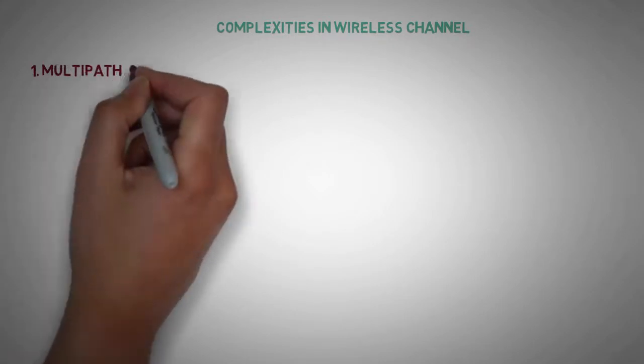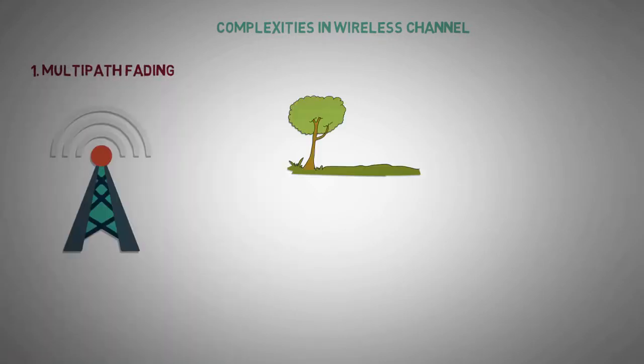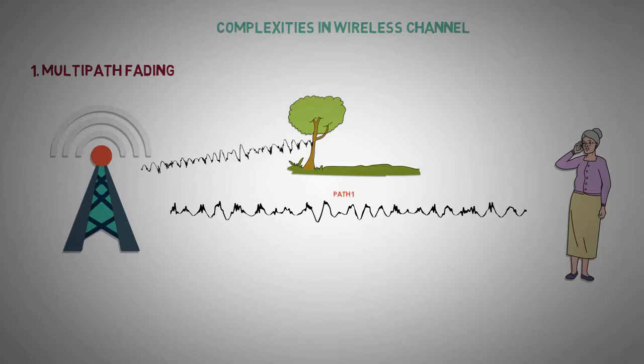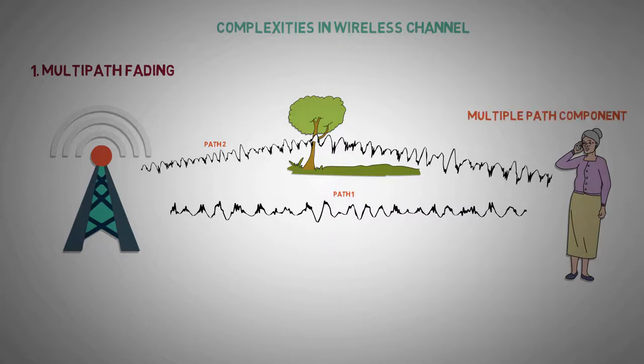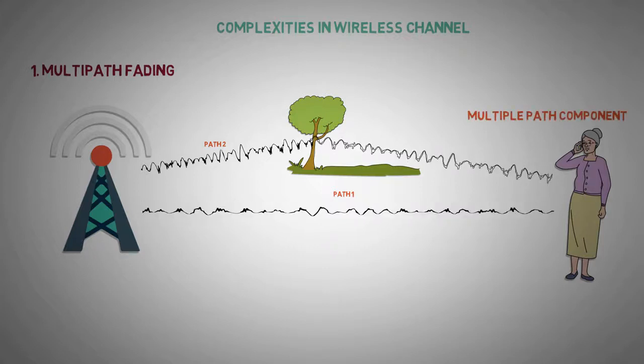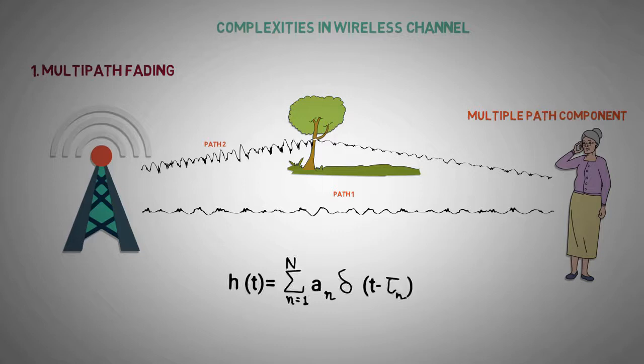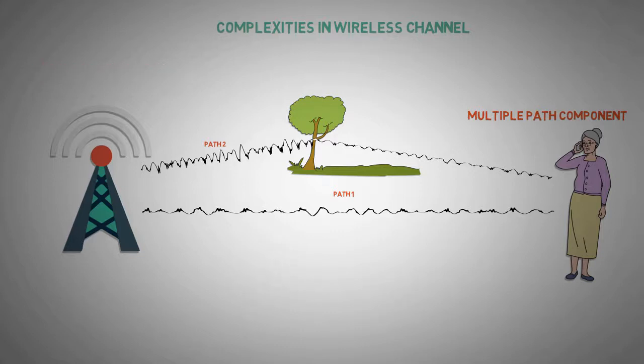Multipath fading: Unlike a wired channel which uses a fixed path, the signals in a wireless channel can reach a user using multiple paths. All these signals, known as multipath components, may have different channel gain and time delay. This combined effect causes what we know as multipath fading.